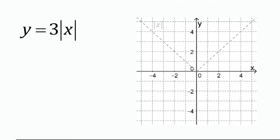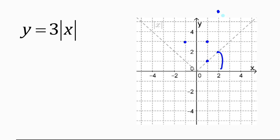For y equals three times absolute value of x, this is a vertical expansion by a factor of three — all points are three times as tall. For example, a point at y equals one is now at y equals three; a point at y equals two is now at six. We draw those lines steeper and taller. The vertex at zero stays invariant — it doesn't change.